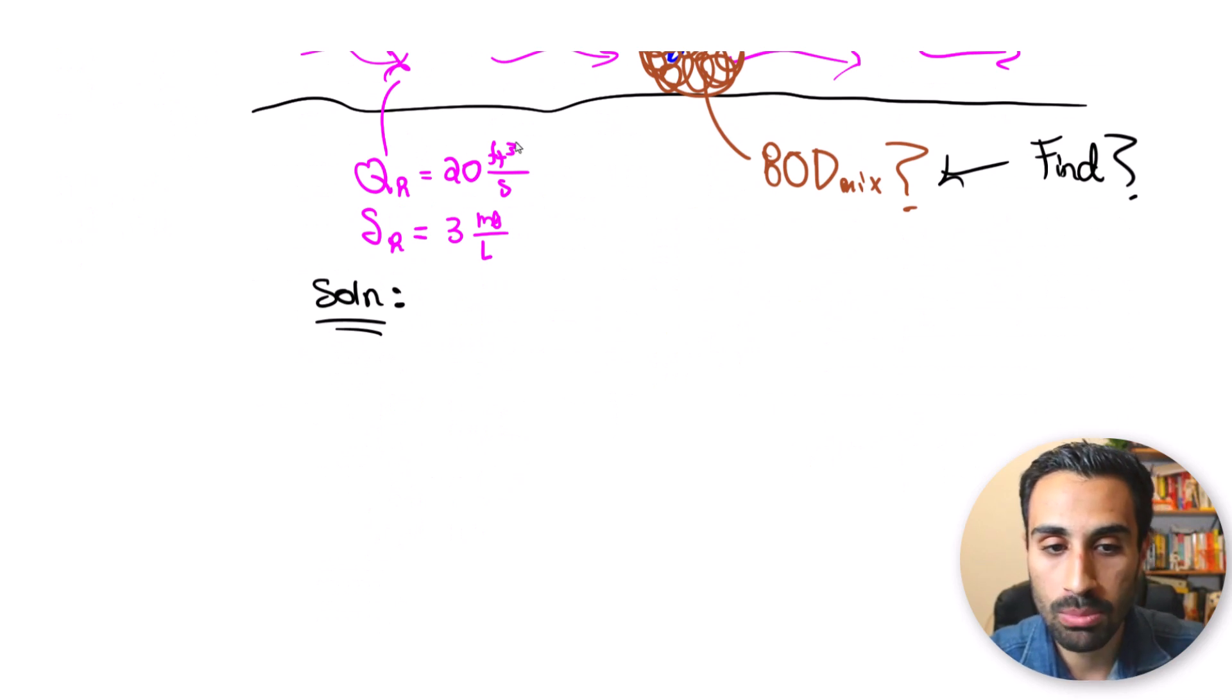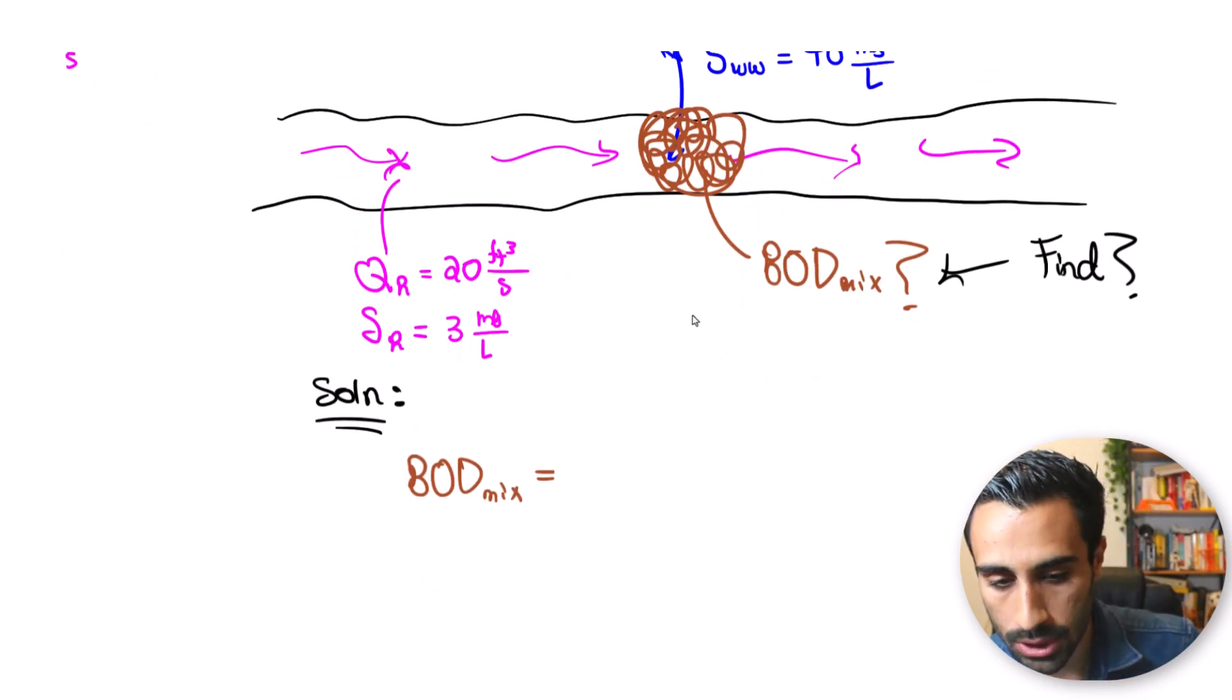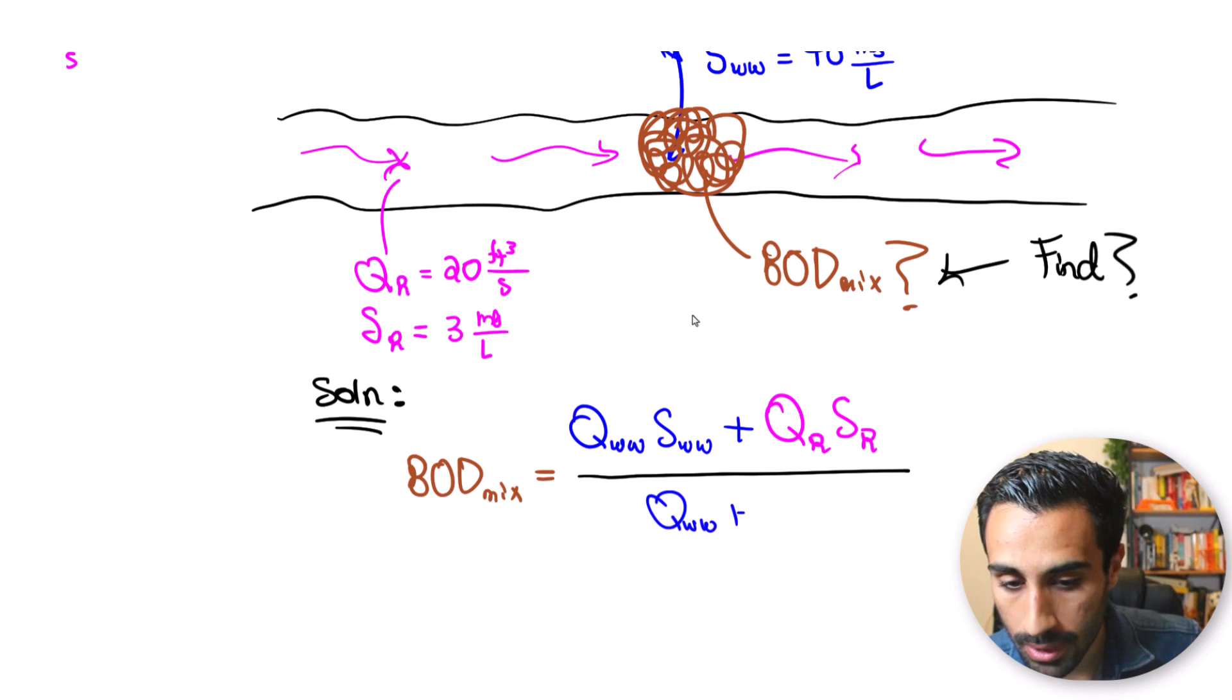So what we will do is write that formula and we will say that the BOD of the mix is going to equal our concentration times the BOD, the BOD concentration times the flow for each one. So how this would look is going to be the Q for the wastewater times the S for the wastewater, S is BOD, plus the Q for the river times the S for the river, and then we take all of this divided by the summation of the flow. Always take it with respect to the summation of the flow. So it's going to be Q wastewater plus the Q river and that's really it.